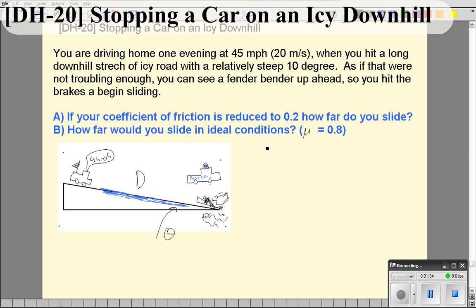This problem is an energy conservation problem, which means that the total mechanical energy in the beginning - keep in mind total mechanical energy is the kinetic plus the potential energy, in this case only gravitational, there's no spring potential energy - plus if you do any non-conservative work like with friction, that's going to change the total mechanical energy.